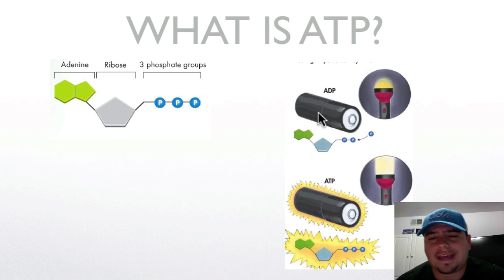So ADP is like a medium-charged battery. It has energy, but not that much. So again, ADP is adenosine di, which means two. Adenosine diphosphate. It has two phosphates, and it has some energy, like this flashlight can light, but not that much.